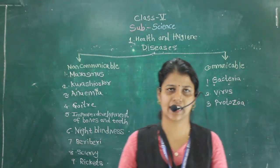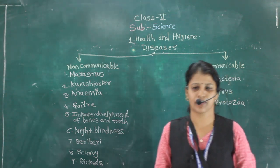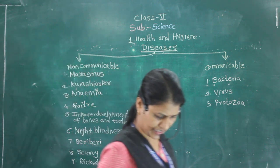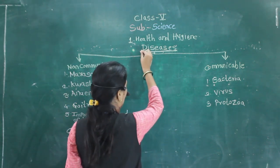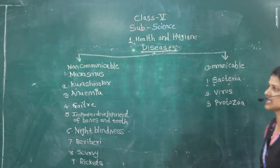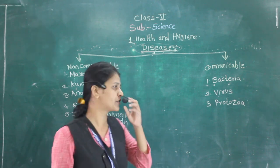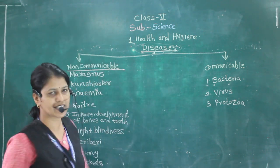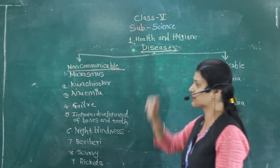The next topic is diseases. If we do not take care of our health or body, we can suffer from diseases. A disease means when one part of our body will not function properly. Diseases are mainly of two types: non-communicable and communicable diseases.